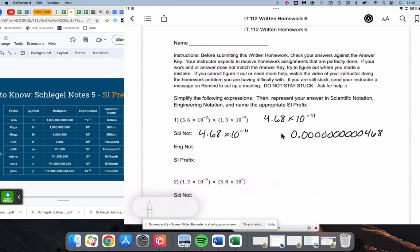And so for engineering notation moving in groups of 3, there's 3, 6, 9, 12. We get 46.8 times 10 to the negative 12.